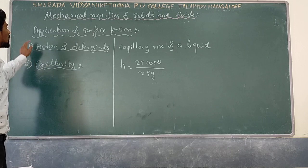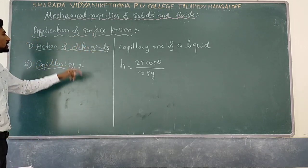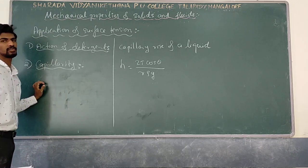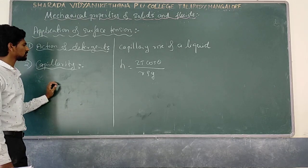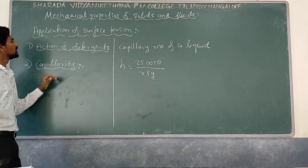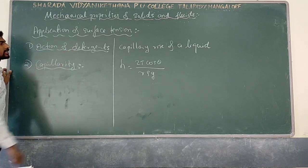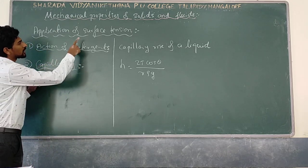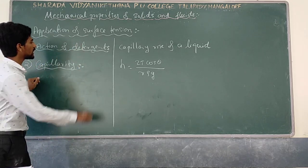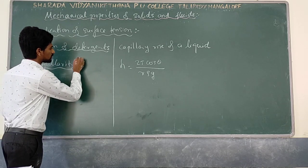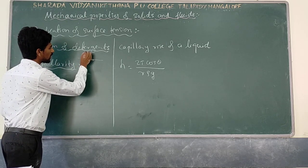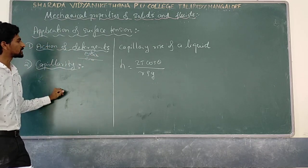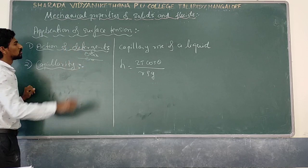Application of surface tension: action of detergent. When you wash clothes without detergent, it is difficult to remove oil or mud. When you add detergent, surface tension of the liquid decreases and the area of contact of the liquid with the mud increases, making it easy to remove.